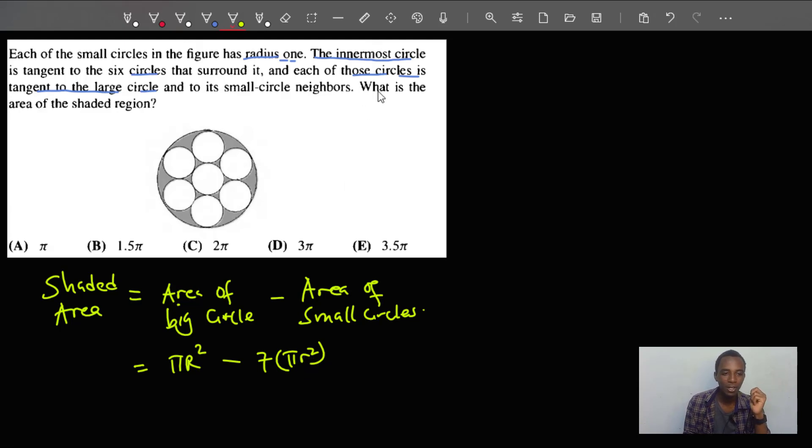and each of those circles has an area of pi r squared. I'm assuming small r is the radius of each of the small circles. And we know what that radius is. For each of the small circles, the radius is one.